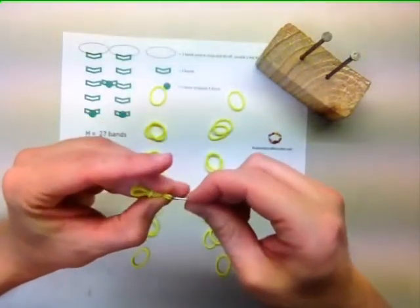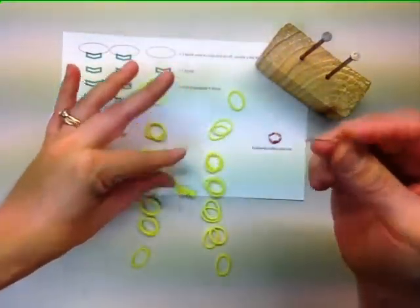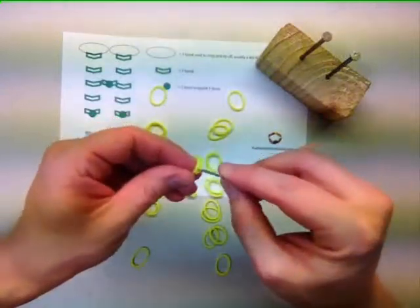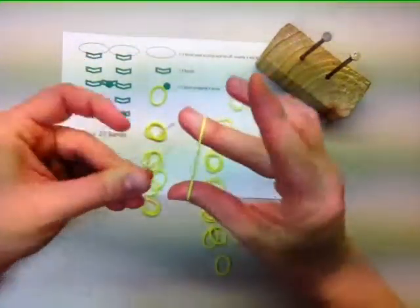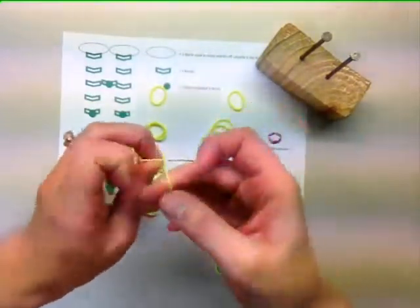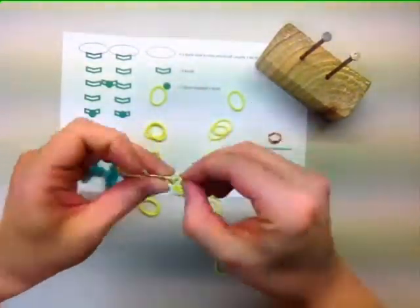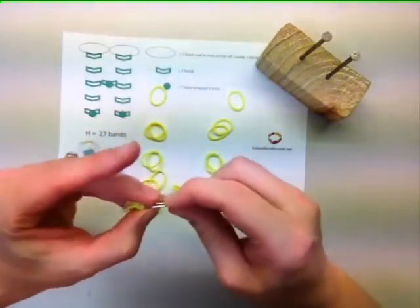The first step is to take two bands and put it on our paper clip. Then take a single band and wrap it around the paper clip four times. Then slide the band down over the two bands until it is in the middle, then remove it from your paper clip. You will need to repeat these steps two more times.